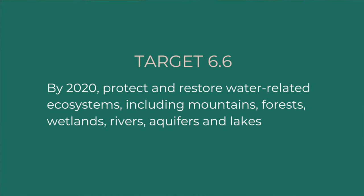Target 6.6: By 2020, protect and restore water-related ecosystems including mountains, forests, wetlands, rivers, aquifers, and lakes. You'll notice this target is aimed at 2020 and not 2030 like most of the others — this is because it's part of the Aichi targets, which are related to the UN Convention on Biological Diversity. They were meant to be updated in 2020, but due to the pandemic, that process has been delayed and will probably reconvene in spring 2022 to recast these targets. I have a couple of videos on that process that I'll link in the blog post if you're interested.